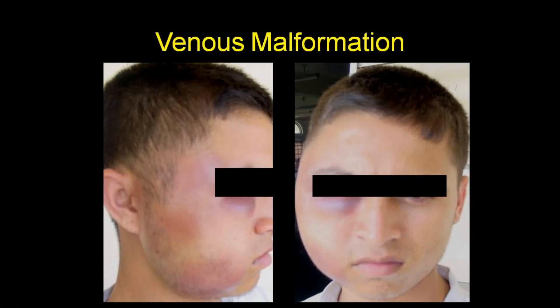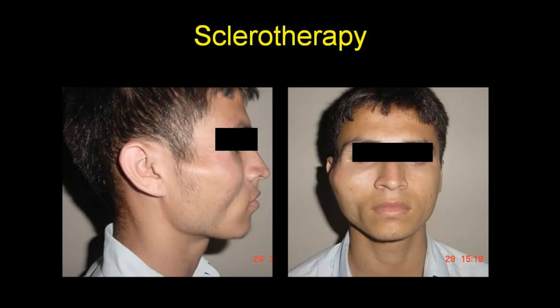Similarly, this young boy had a big venous malformation on one half of his face — the right side. Operating on this is not at all possible; you can't remove half the face. So we treated it with sclerotherapy, and you can see it's completely gone. The patient is cosmetically fine — no scars, no incision, no stitches — and the patient goes home the same evening after the procedure.